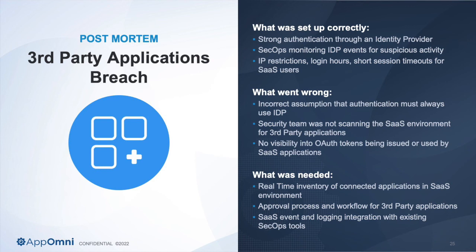When we look at third-party application breaches, there are things I see people get correct: they look at their identity provider, I'm seeing more zero trust and strong authentication, and SecOps monitoring for credential spraying or suspicious activity at the IDP. But what tends to go wrong is an incorrect assumption that apps need to behave like users — logging in like users — and that everything must go through your identity provider. That's typically not the case. Teams often have no visibility into what's going on in the SaaS application: how many OAuth tokens have been handed out, are they being abused, how often are they refreshed or expiring? You have to look at the SaaS application itself. You need an inventory and monitoring of what those apps and APIs are doing in production.